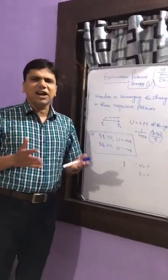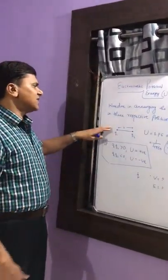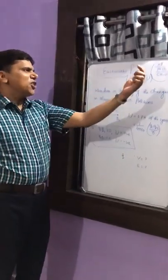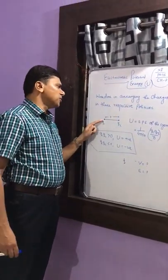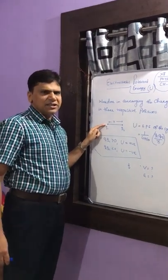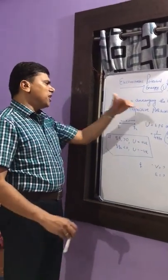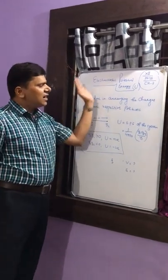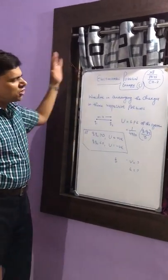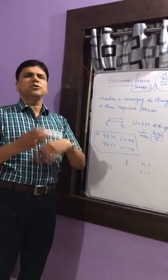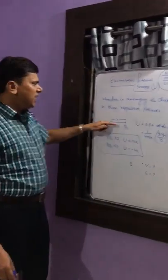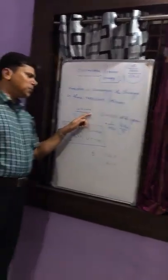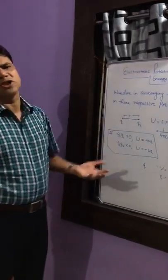We imagine these charges are initially at infinity. When we bring the first charge from infinity to its point, there is no other field present, so we do no work. But to bring the second charge from infinity to its point, we have to do some work.